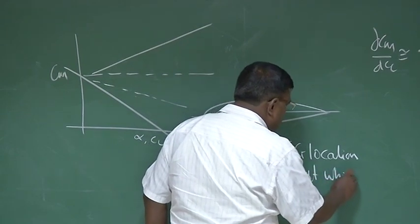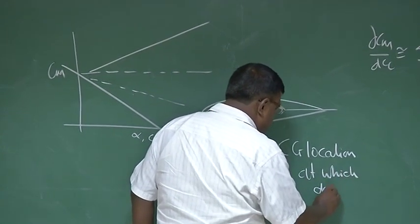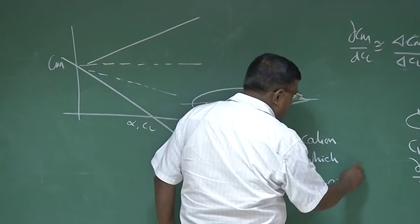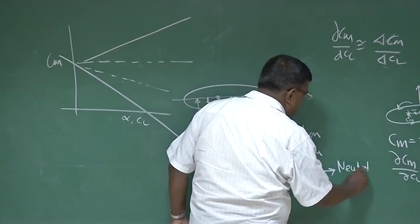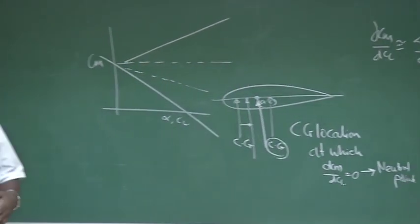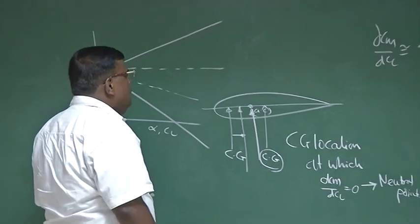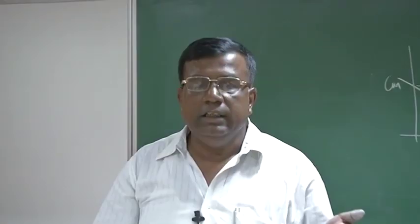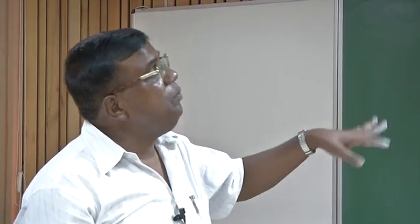For a designer, he always finds out the neutral point, because the neutral point depends on the configuration — the size of the wing, the aspect ratio, the taper ratio, the aerofoil used. He ensures that CG never crosses the neutral point. For this case — wing alone — the AC and the neutral point are the same.